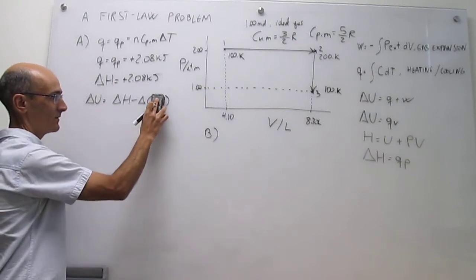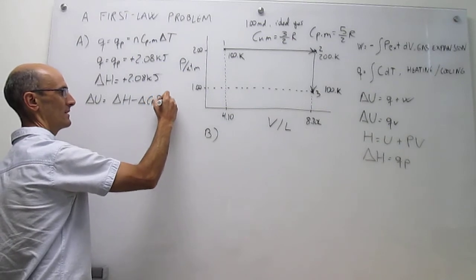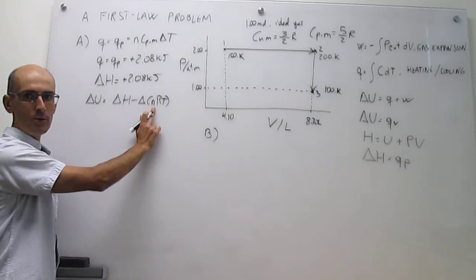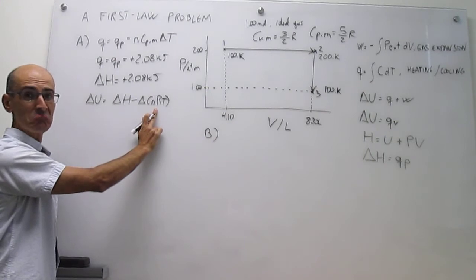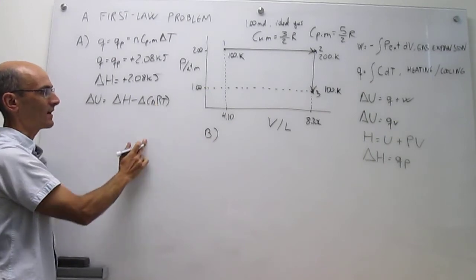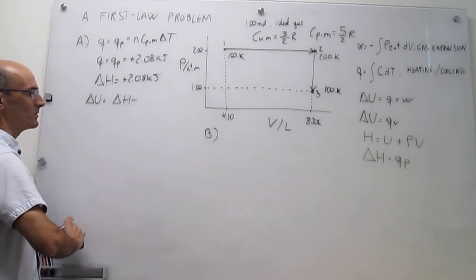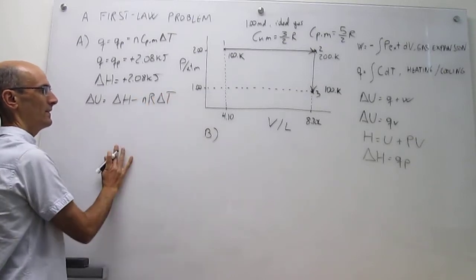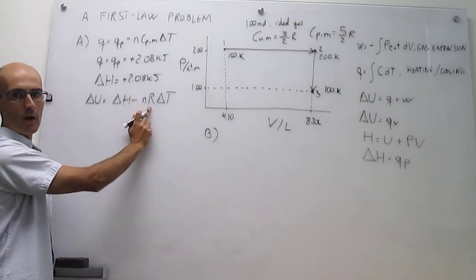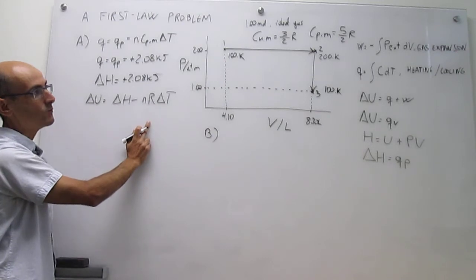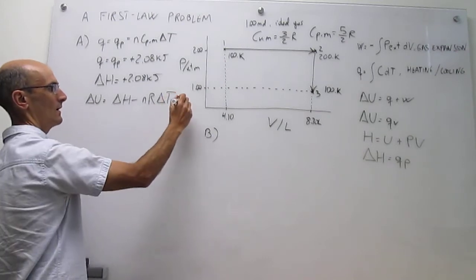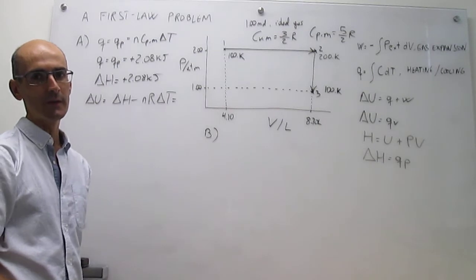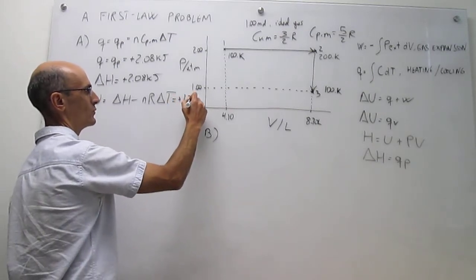A cleaner approach: since this is an ideal gas, ΔH = ΔU + Δ(PV) = ΔU + nRΔT. We have ΔH already, and n is constant at one mole, R is 8.31 J/mol·K, and ΔT = 200 K − 100 K. Rearranging gives ΔU = ΔH − nRΔT, which happens to be +1.25 kJ.